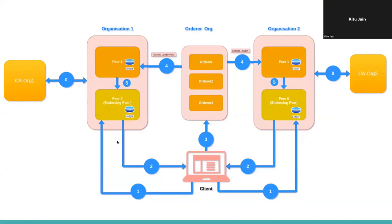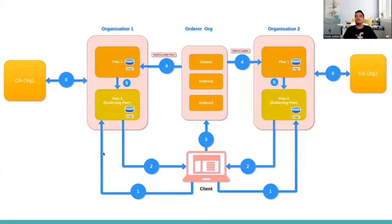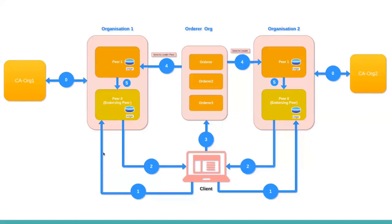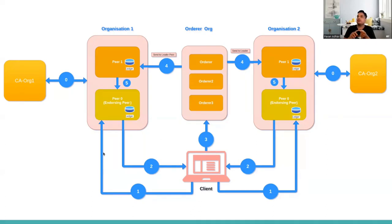Shane asks about the different peer roles, noting the documentation mentions endorsing, committing, and anchor peers. Pavan explains there are actually four roles: committing, endorsing, leader peer, and anchor peer. Importantly, these are roles, not different types of peers — one peer can play all four roles at different points in time.